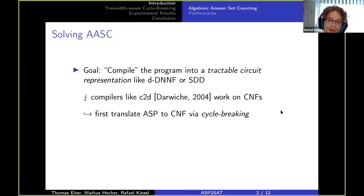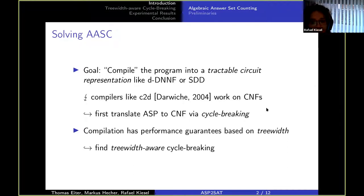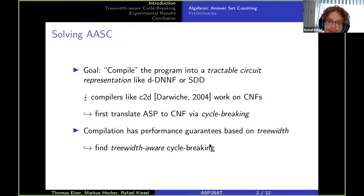Now there are many cycle breaking algorithms already, but we chose to introduce a new one because compilation has performance guarantees based on treewidth. So what we want is a CNF encoding of our answer program that has low treewidth. Therefore we want to find a cycle breaking that is treewidth-aware, meaning that it increases the treewidth a bit but not by too much.